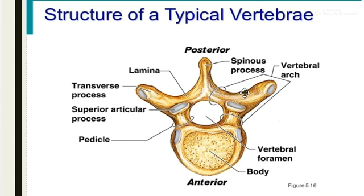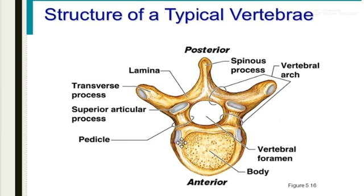There are two vertebral arches. The first vertebral arch is present between the vertebral body and transverse process, and the second vertebral arch is present between the transverse process and spinous process. Here we can see the arch-like colored structure which is known as a facet.